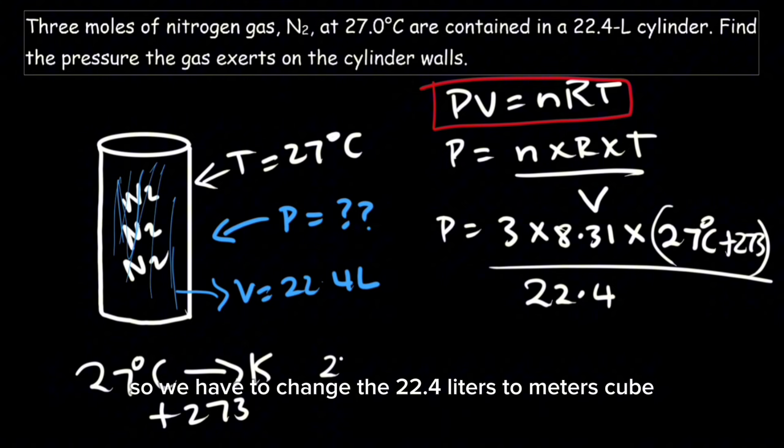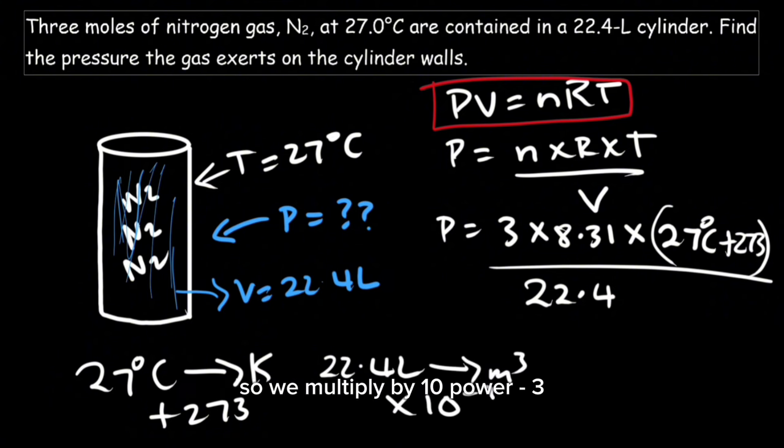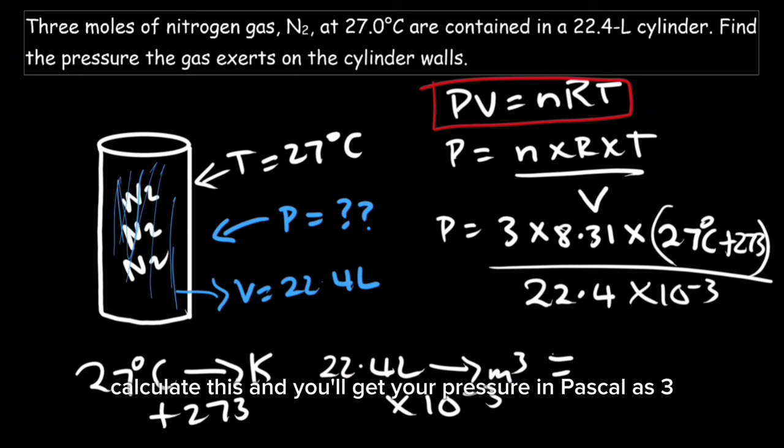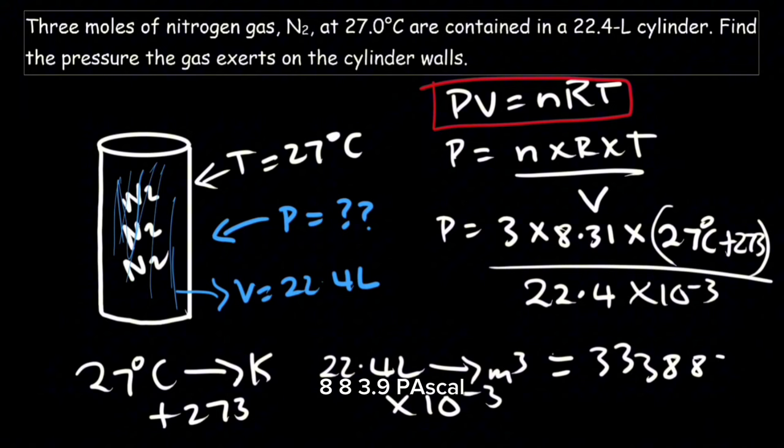So we have to change the 22.4 liters to meters cubed. We'll multiply by 10 to the negative 3. Calculate this and we'll get the pressure in Pascals as 333,883.9 Pascals.